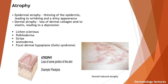Atrophy can be epidermal or dermal — it is a loss of some portion of skin. Epidermal atrophy is thinning of epidermis leading to wrinkling and a shiny appearance. Dermal atrophy is a loss of dermal collagen or elastin leading to depression. Examples are lichen sclerosus, poikiloderma, striae, anetoderma, and focal dermal hypoplasia. Here you can see the example of steroid-induced atrophy.